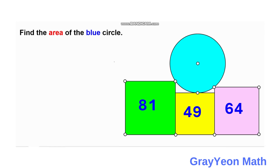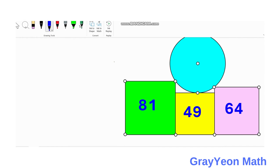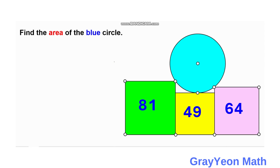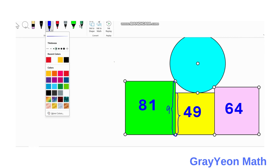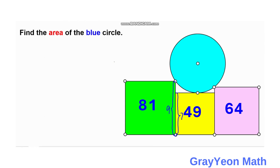First, we need to focus on the lengths of the squares. We are given three squares: 81 square units for the green square, so the square root of 81 is 9, making that side 9. For the yellow square, the square root of 49 is 7. And for the lavender square, the square root of 64 is 8.